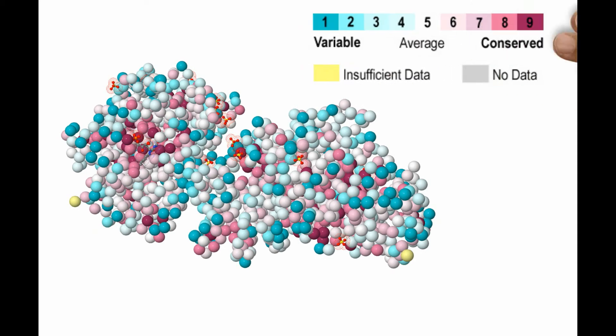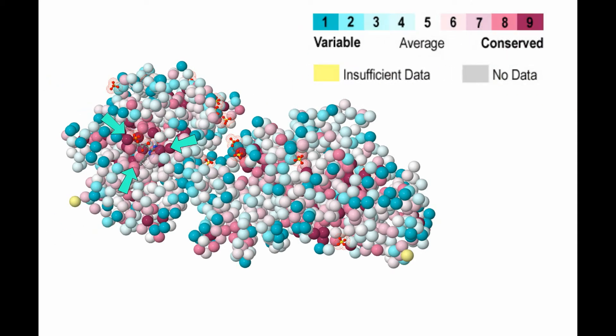Furthermore, the FMN pocket is a region of largely conserved residues, shown in pink and purple here, while the surface residues are mostly variable.